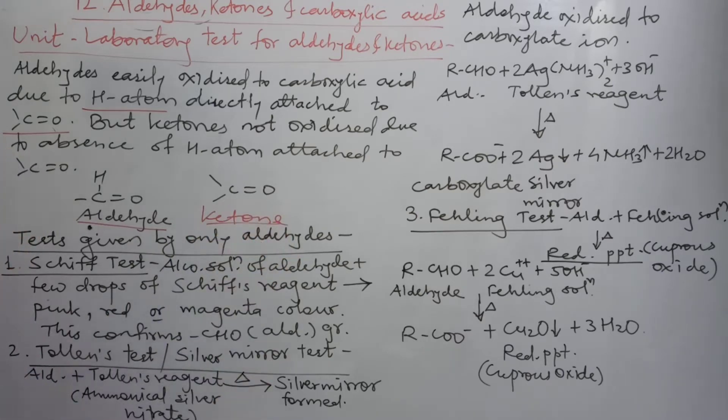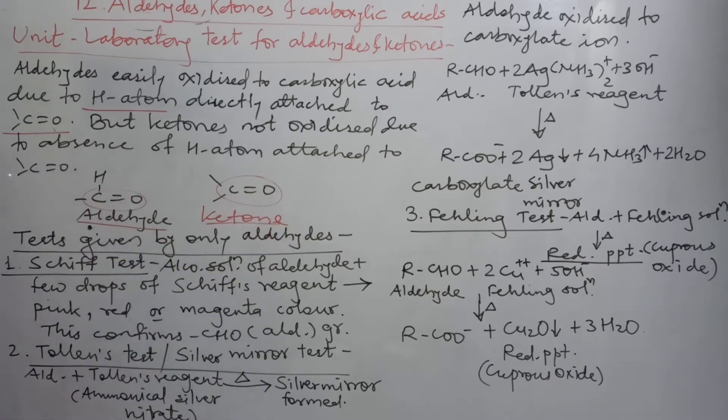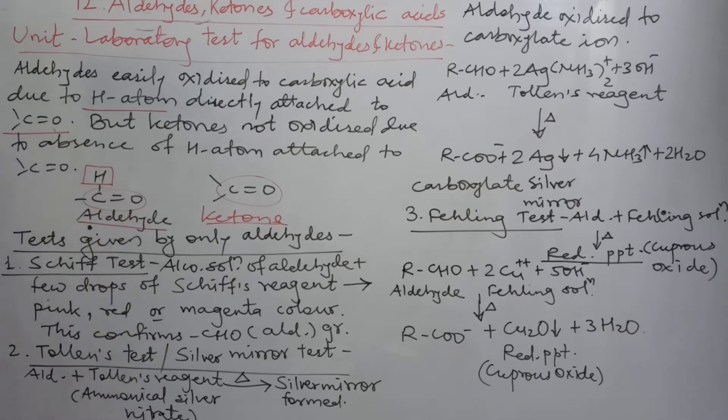You know very well both have CO group, here CO group, here CO group. Then what is the point of difference? This hydrogen is the point of difference. Here a hydrogen atom is present attached to the carbonyl carbon. This is important.